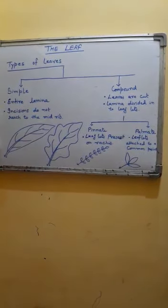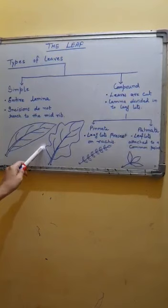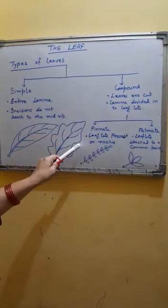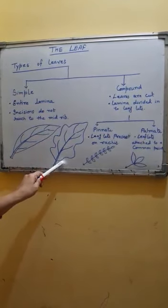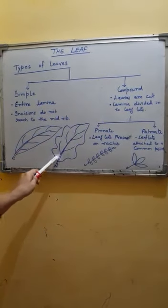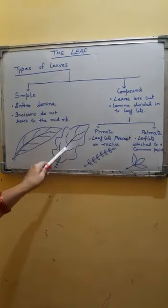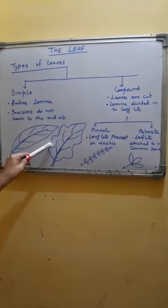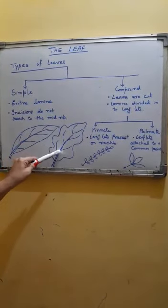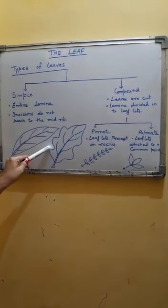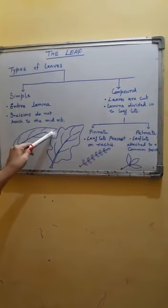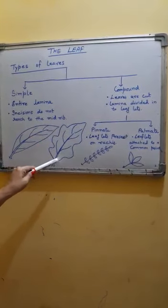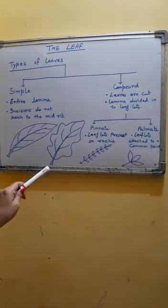Even if incisions are present, as you can see incisions are there and the leaf is cut, this cut does not reach the mid-rib. This part of the leaf is called mid-rib, and incisions are far away from the mid-rib — incisions do not reach the mid-rib. So it is an intact leaf, and it is called a simple leaf.